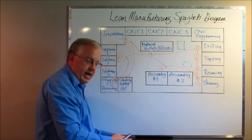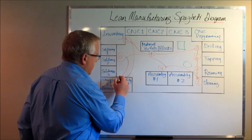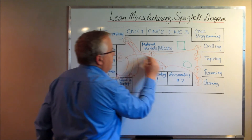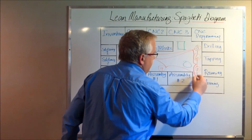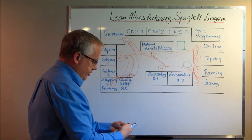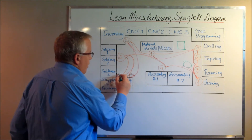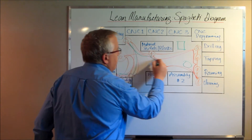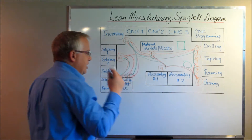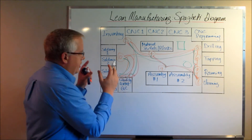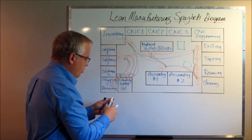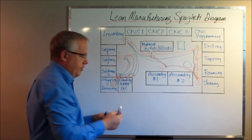When doing spaghetti diagrams you'll typically use a bunch of different colors. You'll have multiple color-coded lines going back and forth because you're taking several sample portions. People commonly have all kinds of colors going back and forth as they take multiple samples in order to understand how work is flowing and where it's going in order to get out the door.